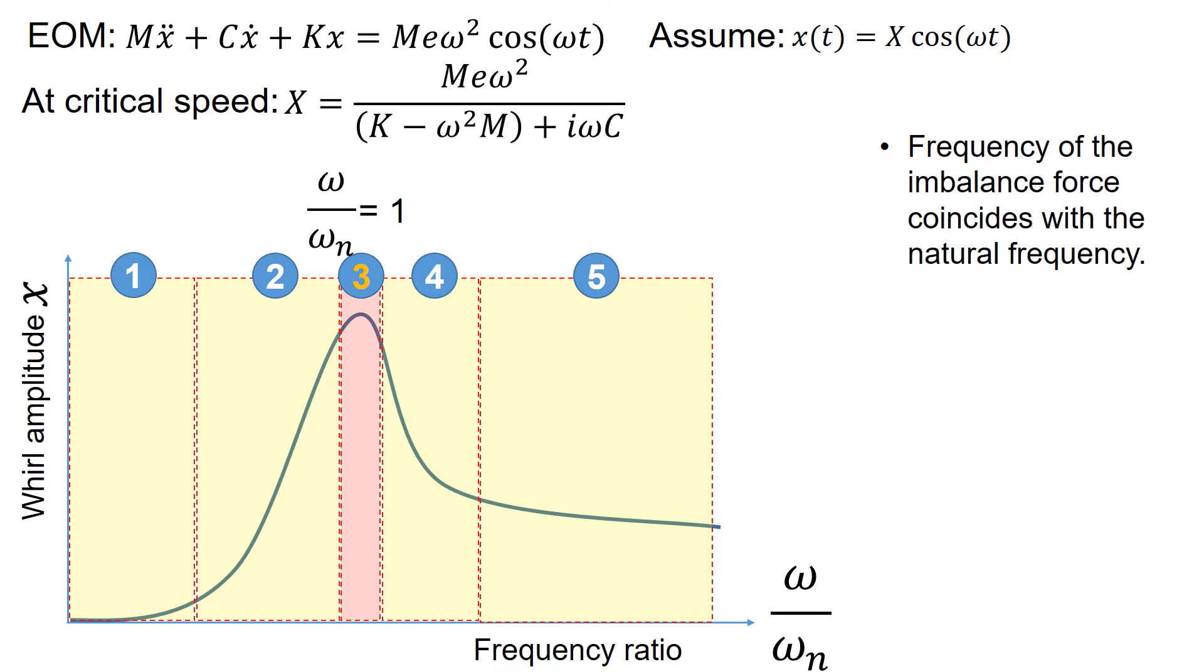Moving on to the area of interest number 3, where the rotor running speed coincide with the system natural frequency. At this condition, the denominator on the left side becomes 0. So the amplitude motion X can be simply written as a function of imbalance over damping, as shown in the equation highlighted in red.